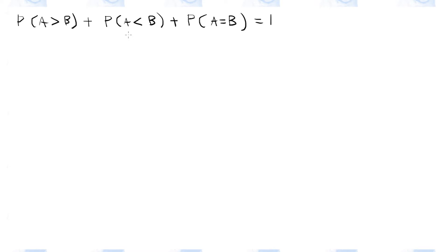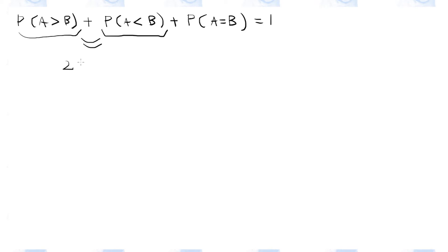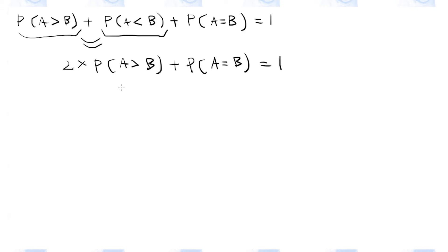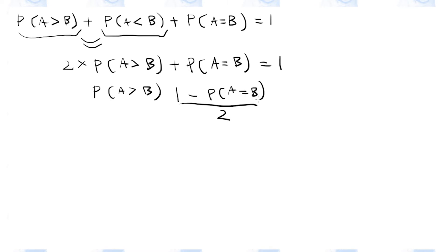Another thing to note is that, assuming that the coin is fair, the probability of A winning and the probability of B winning must be the same. So we can rewrite this equation as 2 times the probability of A winning plus the probability of a draw equals 1. By rearranging the terms of this equation, so all we have to do is find the probability of A getting the same points as B.